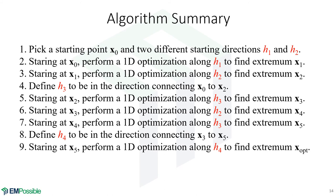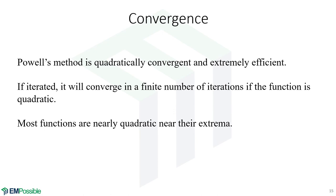We converge to the final overall extremum. If the function is quadratic, we converge exactly because we've used two conjugate directions. Most functions are close to quadratic near their extremum, and this may need to be iterated for non-quadratic functions. We call it quadratically convergent, which makes it extremely efficient — even if we have to iterate, it will converge very quickly in a finite number of iterations.